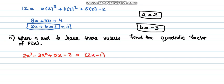So we already have a factor 2x - 1. Out of a cubic equation, if we already have a factor, the remaining would be a quadratic factor. So the quadratic factor can be written as ax² + bx + c.